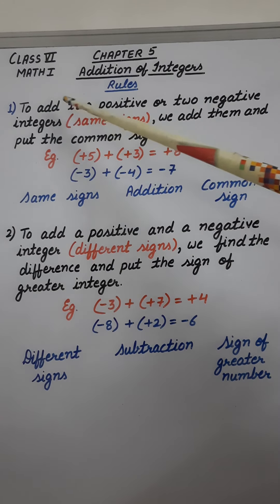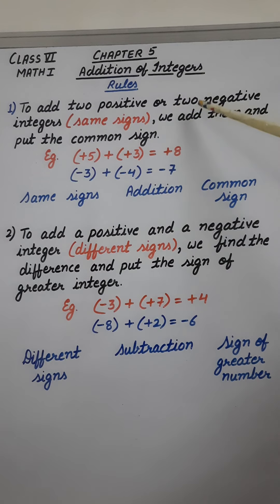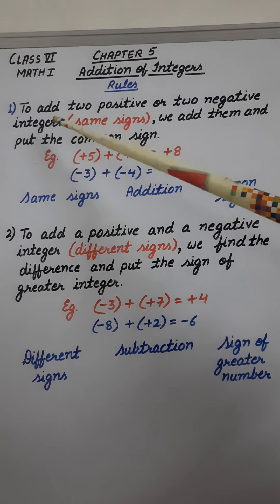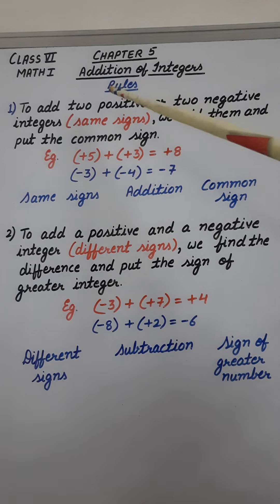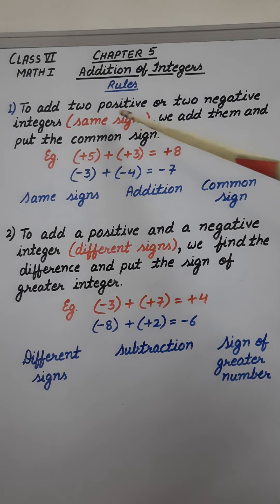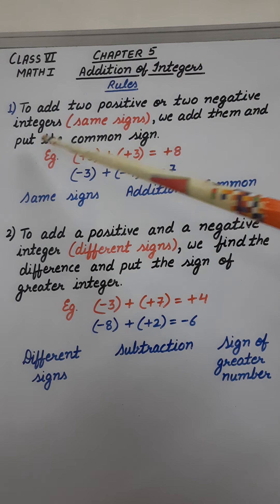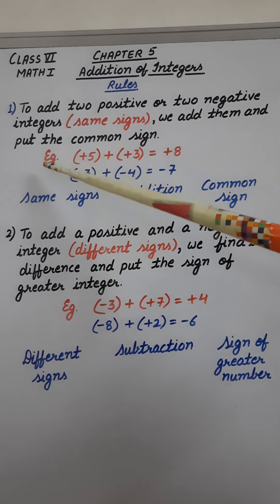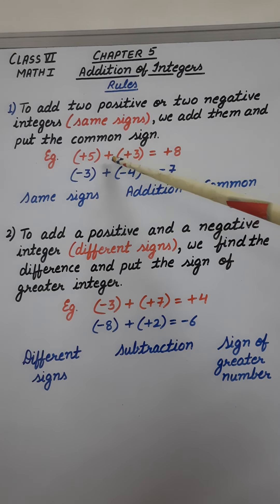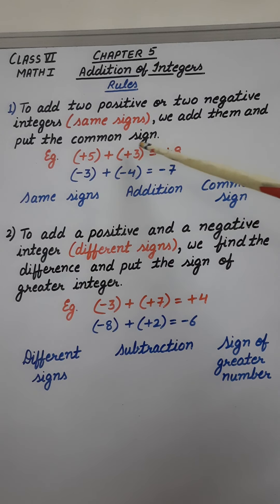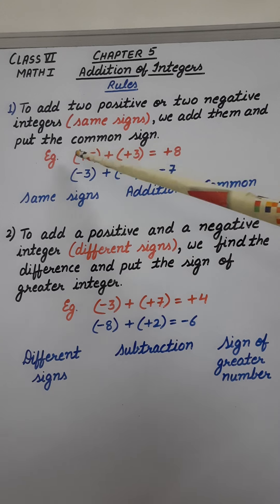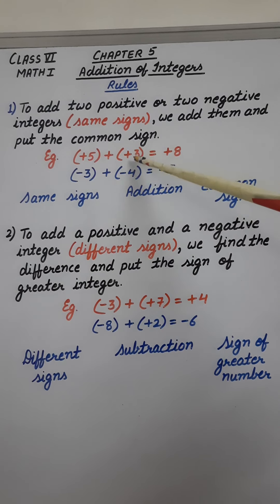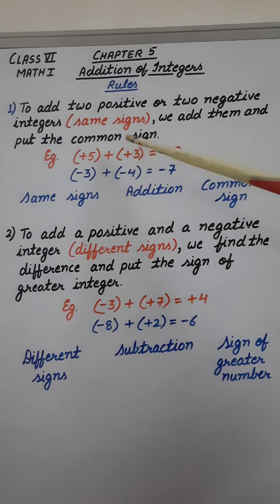Number one, to add two positive or two negative integers — that means if we are adding two integers with the same signs — we add them and put the common sign. For example, here I am adding plus 5 and plus 3. Both of these numbers have the same sign, which is plus. So we will add them: 5 plus 3 is 8.